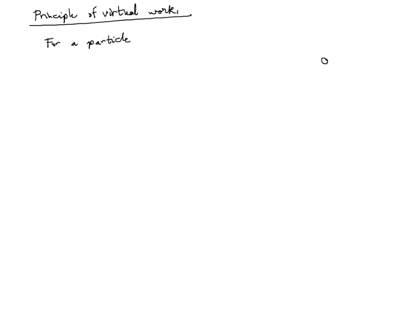Here is the particle and there are some forces that apply to that particle. Call this F1, call this F2, call something like this F3 — there can be many more. Newton's second law in the case of equilibrium states that the sum of forces acting on the particle should be equal to zero. The resultant force, which is essentially the sum of Fi, where Fi are the different externally applied forces on the particle, is equal to zero.